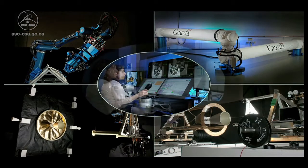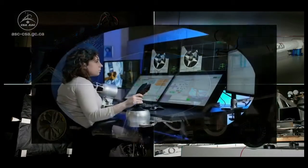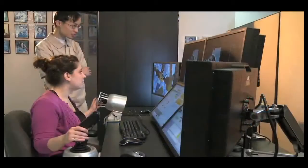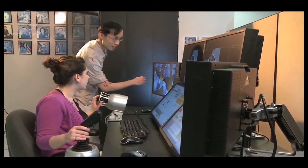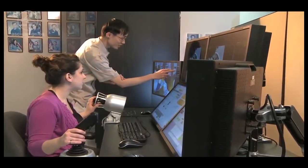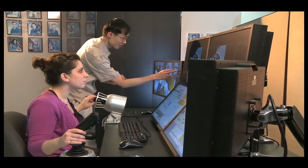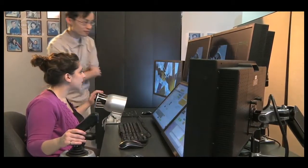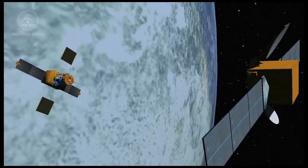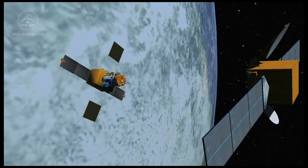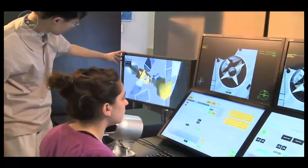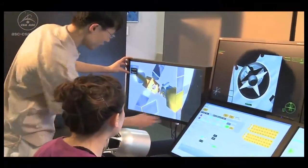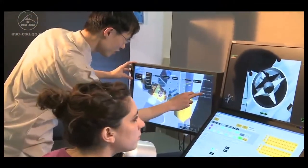At the heart of the Next Generation Testbed facility is the Mission Operations Station, a next-generation control station designed to allow operators to plan, simulate and execute servicing missions at various locations from low Earth orbit and beyond. This flexible control station will let an operator evaluate different aspects of a robotic servicing mission, from lighting conditions to telemetry delays and other challenges of remote operations.